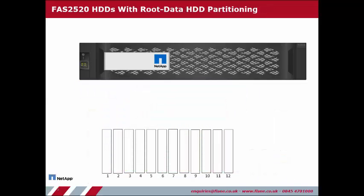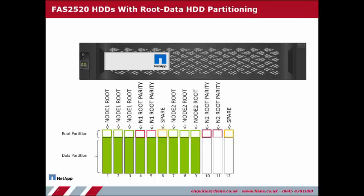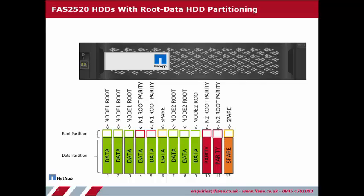However, the root hard drive partitioning functionality logically divides each disk into two slices, one forming the root partition and the other for data. Each slice is treated like a physical disk, enabling RAID groups to be formed. Each root aggregate requires 5 slices for the root partition, 3 for data and 2 for RAID DP parity, with 2 slices remaining for use as spares.